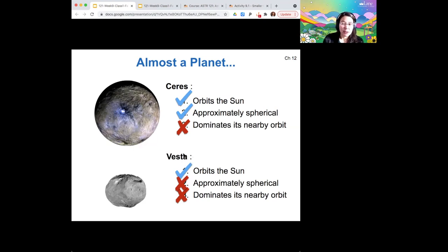Vesta orbits the sun. It's also in the asteroid belt, so it also doesn't dominate its nearby orbit. And as you can see from the picture, it's not really approximately spherical.